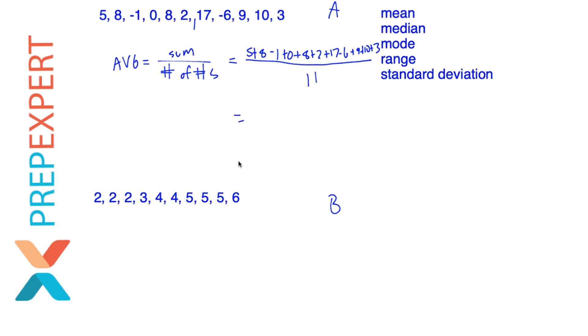So our sum overall is 55. Looks like the sum of our values is 55 and there are 11 values in the set. So when I divide 55 by 11, I get a mean of five. Excellent. Nice and easy. Our mean is five.